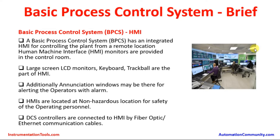Here we are seeing a control room. Basic Process Control System HMI — HMI stands for Human Machine Interface. BPCS has an integrated HMI for controlling the plant from a remote location. HMI monitors are provided in the control room. We are seeing large screen LCD monitors where operators are sitting and operating the plant. Large screen LCD monitors, keyboard, and trackball are part of the HMI. Additionally, annunciation windows may be there for alerting operators with an alarm — for example, when a tank level goes high, or temperature or pressure inside a boiler goes high. Those things will be indicated by an alarm, in addition to the monitors.